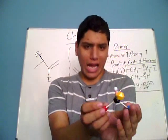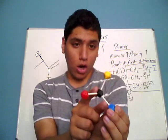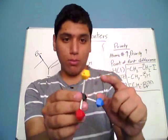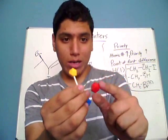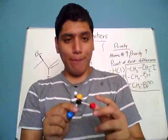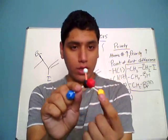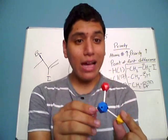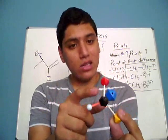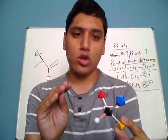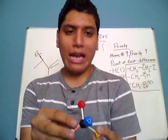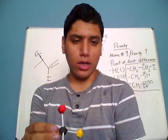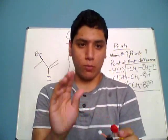In this model I have here, the black ball is a carbon atom, and it's bonded to four different things: the yellow ball, the blue ball, the red ball, and the whitish gray ball, meaning that it's bonded to four different substituents. So what that means is that this carbon atom is a chiral center, and as a result, this carbon atom can also be called an asymmetric carbon.